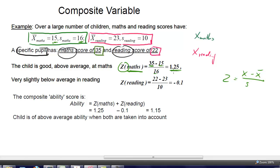What we get is 1.25, and we know that means that the pupil's maths achievement is more than one standard deviation better than the mean.